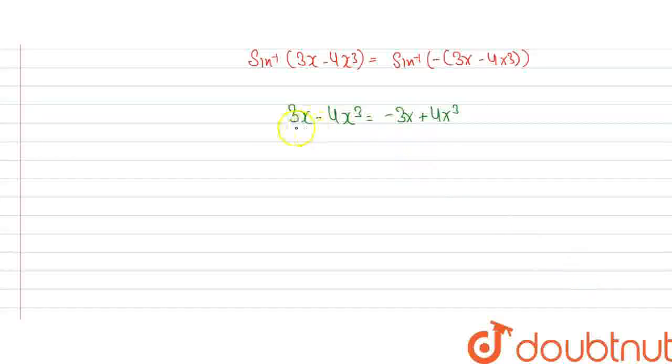So the left equation will be 3x - 4x³ is equal to -3x + 4x³. Now from this equation we can say that the equation will come as 4x³ + 4x³ - 3x - 3x - 3x is equal to 0.